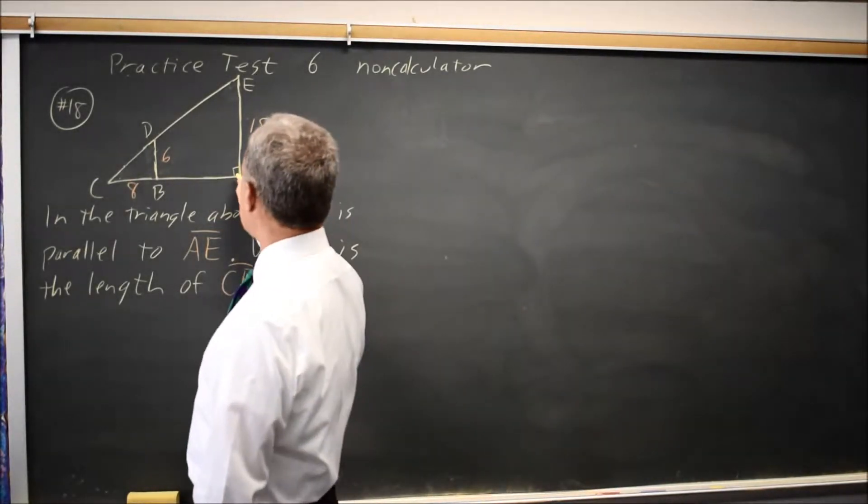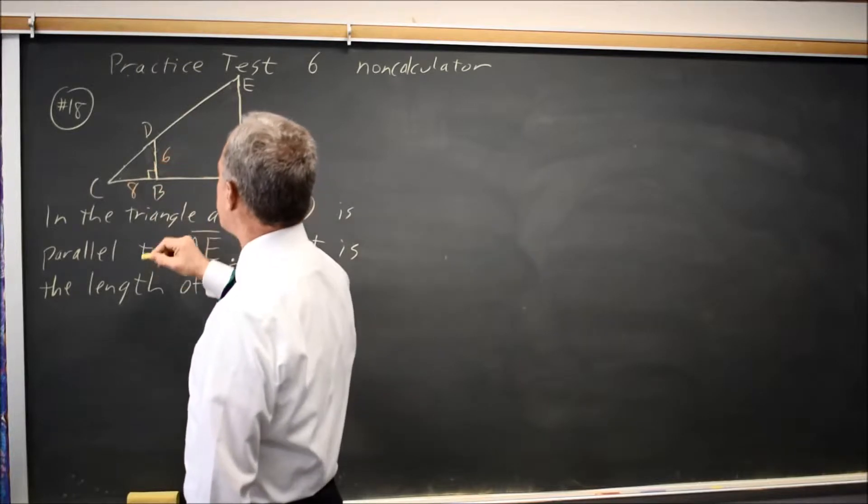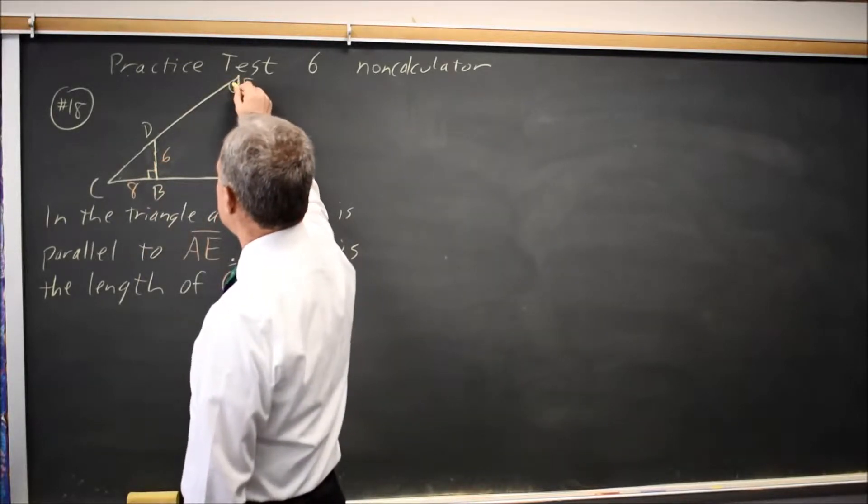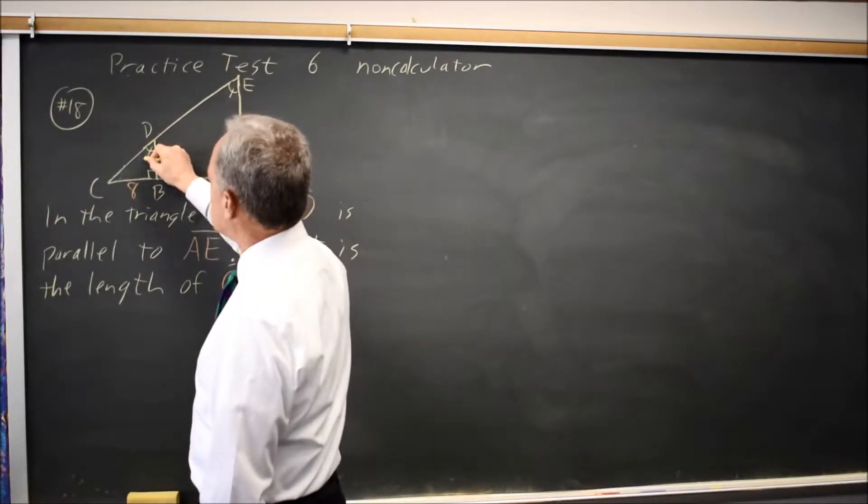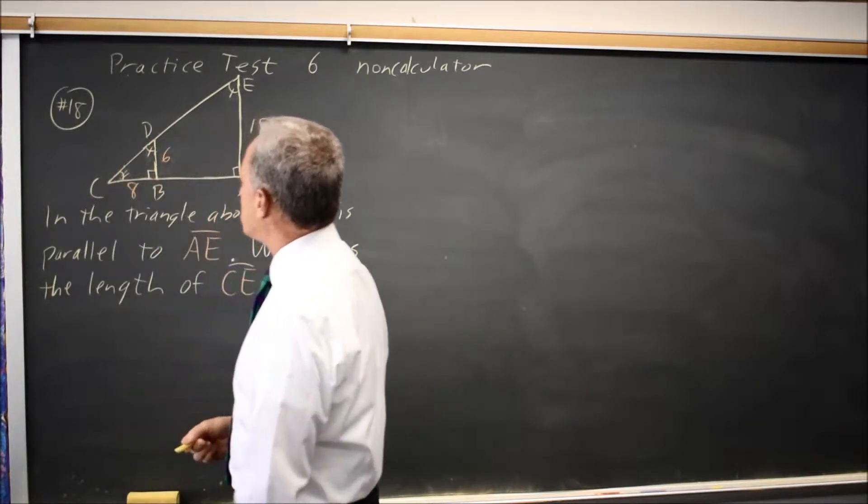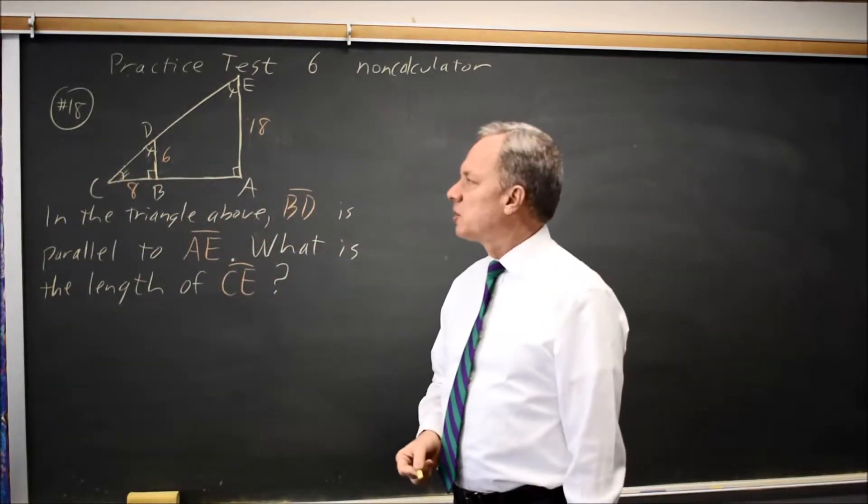Since these sides are parallel and this is a right angle, this will also be a right angle. Since they're parallel, this angle here equals this angle here, and this angle is common between the two triangles, so we have similar triangles.